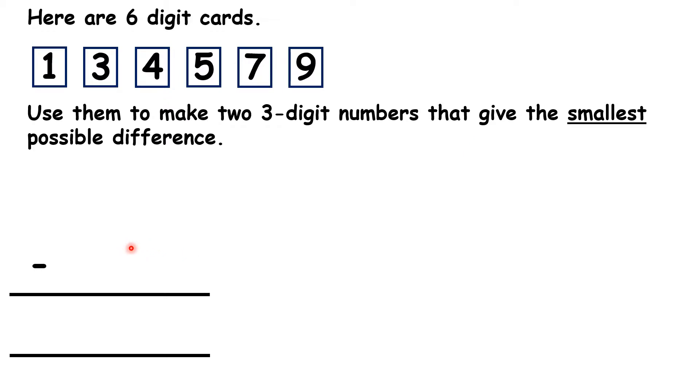So we need to make two numbers and we need to arrange the digits so that when you subtract those numbers, you get the smallest possible number, the smallest possible difference. Pause the video and see if you can do this, and here you might need to use trial and error, try out different ideas and see what works.